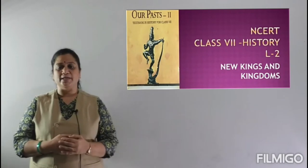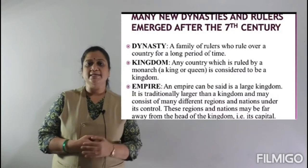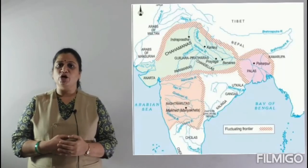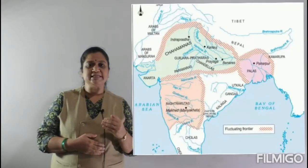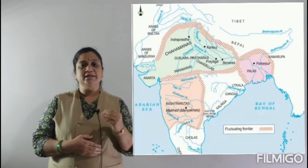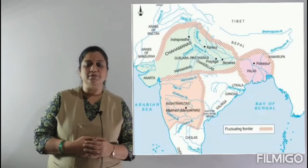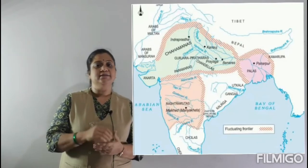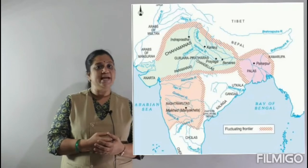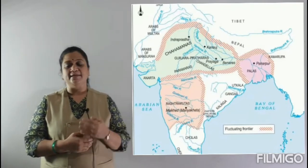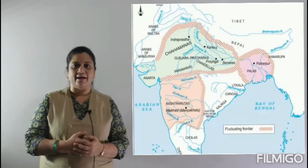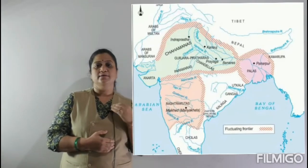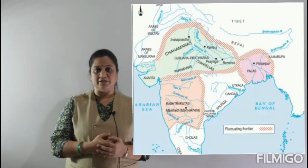After the 7th century, many new dynasties emerged in our subcontinent. On page number 16 of your textbook, if you refer to the map, you will see three big kingdoms shown with red dotted lines. These are the three big empires in the north, south, and the Deccan of India.